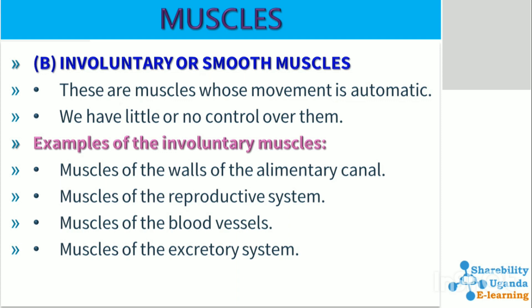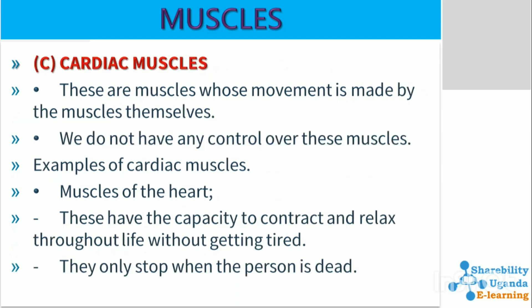Examples of involuntary muscles include muscles of the walls of the alimentary canal, muscles of the reproductive system, muscles of the blood vessels, and muscles of the excretory system.